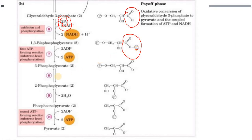The next step is the formation of 3-phosphoglycerate, where the first ATP is generated. The ATP comes from the substrate 1,3-bisphosphoglycerate itself, where the phosphate is removed from the first position. The phosphorylation from the earlier step is reversed — the compound is converted from an acid back to a carboxyl group — forming 3-phosphoglycerate.